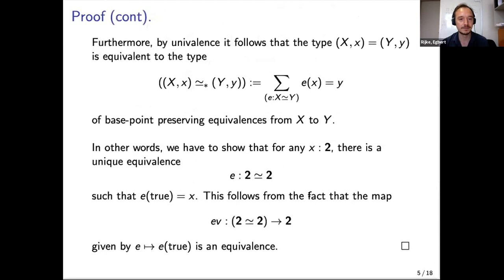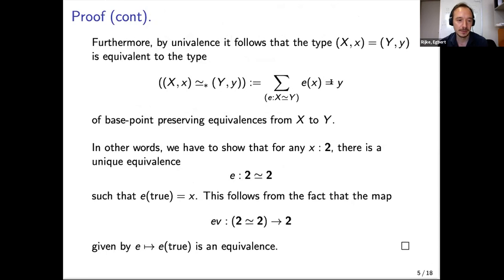There's one more step with univalence. When you have two pointed types X with basepoint x and Y with basepoint y, the type of equalities between them is equivalent to the type of basepoint-preserving equivalences. By this observation, it suffices to show that for any Boolean x, there is a unique equivalence from Bool to Bool that maps true to x. This follows from the fact that the evaluation map from automorphisms of Bool, evaluating at true, is an equivalence. That is the canonical equivalence, and this is the proof.